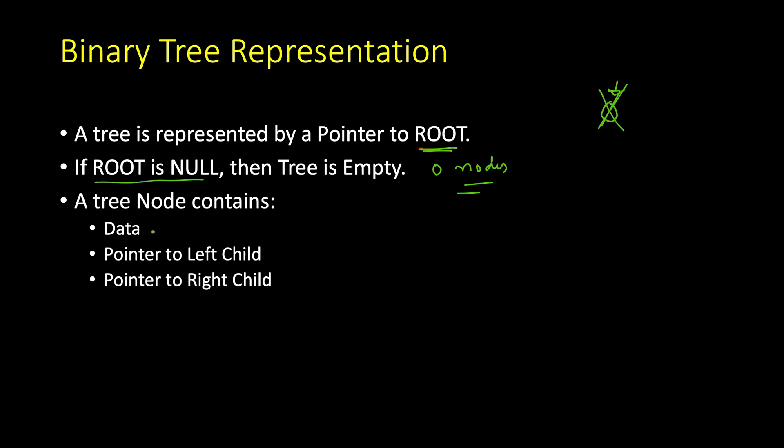And a tree node is represented as data, and this data can be very complex data, not just integer or character. Then pointer to the left child, pointer to the right child. In real applications you can have more pointers like pointer to parent which can make some of the tasks very easy, and some more pointers like pointer to siblings. But in plain binary tree we will just use these three values.